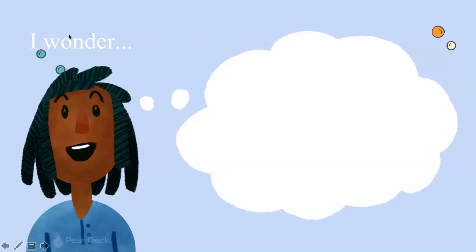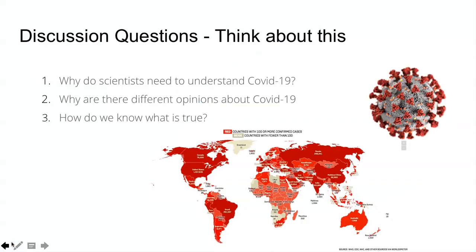Now think about COVID-19 and your experience with it. What do you wonder about it? What questions do you have about COVID-19? Why is it being talked about all over the world and not just here in New Mexico? Pause the movie and think about questions you have and would like to know, and write them down. Now I'd like you to think about this: why do you think scientists need to understand COVID-19? Why are there different opinions about COVID-19? And how do we know what is true? Pause the movie and write down a response to these questions.